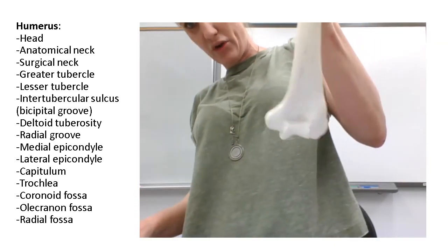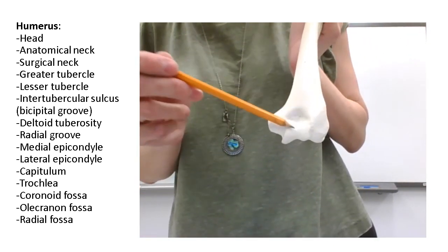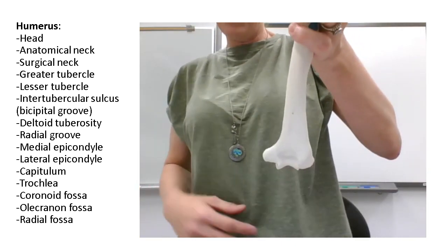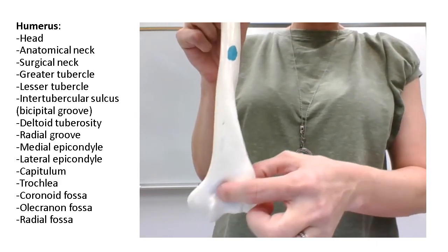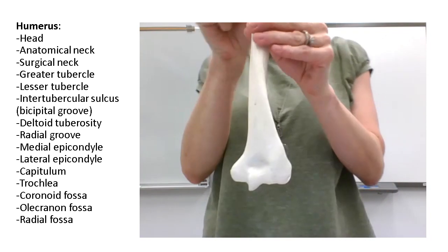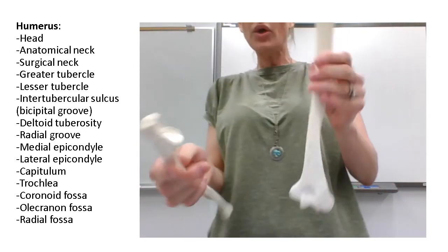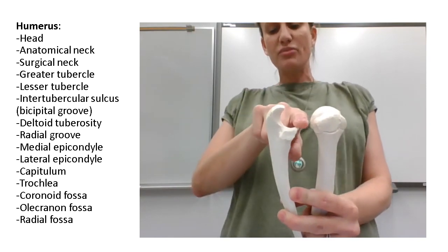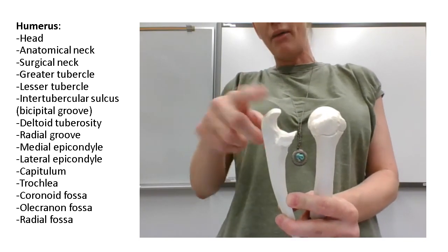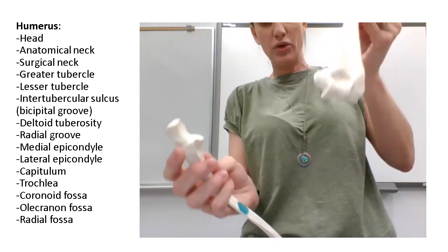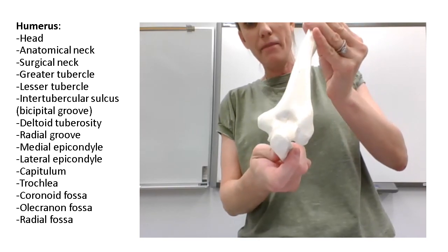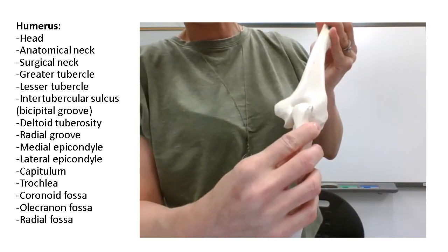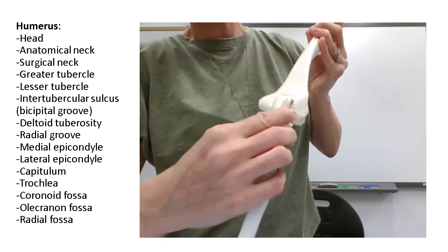In the back of the humerus, we have this larger depression called the olecranon fossa. It's there for the olecranon to slide into when the elbow is straightened. The olecranon is the large process on the top of the ulna — the coronoid process is on the bottom, the olecranon is on top. When I straighten the elbow out, notice how the olecranon slides right into that olecranon fossa.